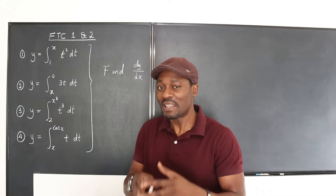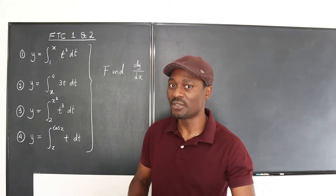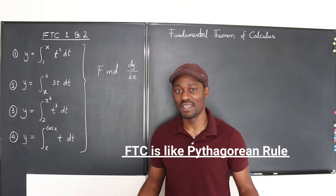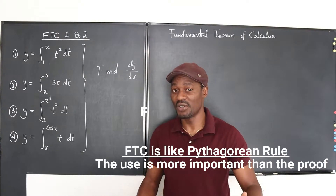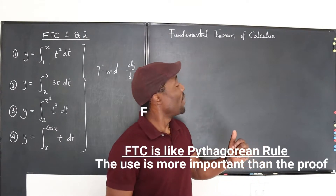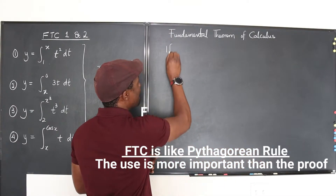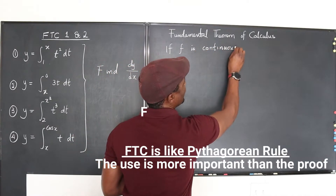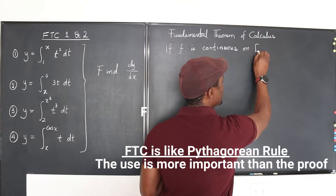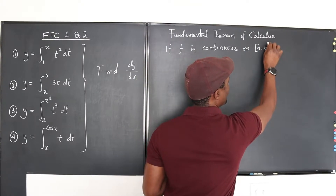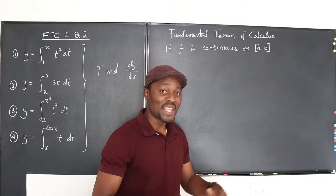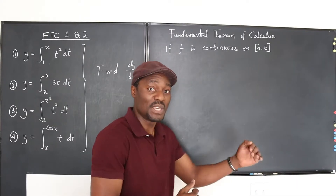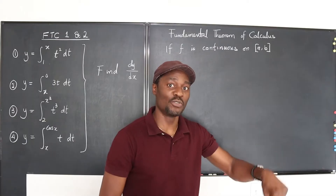So let us see what the concept says at the beginning and let's see what Part 2 tells us to do. So what exactly does the Fundamental Theorem of Calculus say, especially Part 1, which is where we're going to start? It simply says that if f is continuous on a closed interval a to b, it's a continuous function. That means it is differentiable over that interval, which simply means it has a derivative as you go from a to b. Whatever point you pick between a and b, there's always a derivative — there's always a dy/dx.